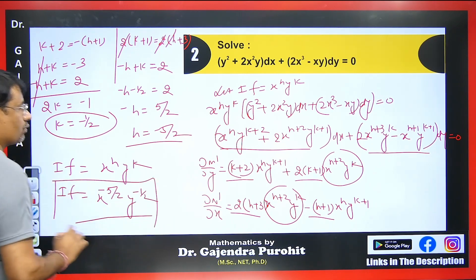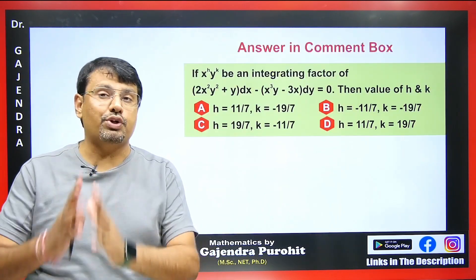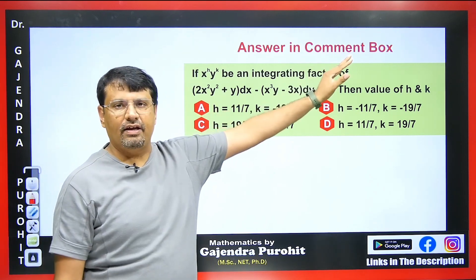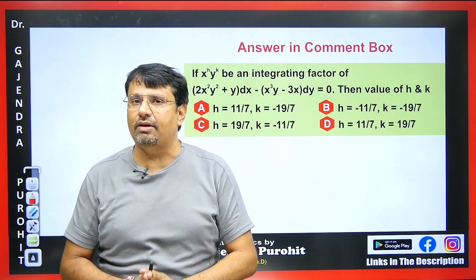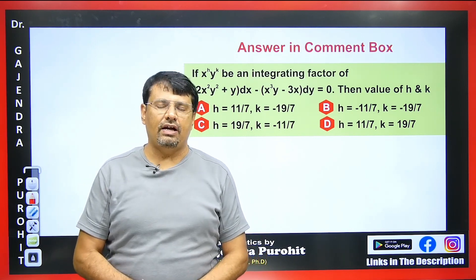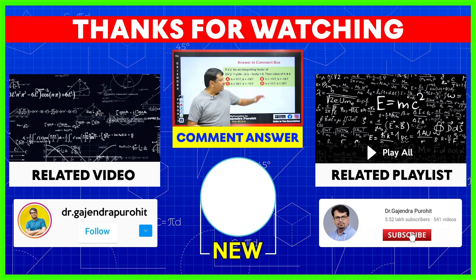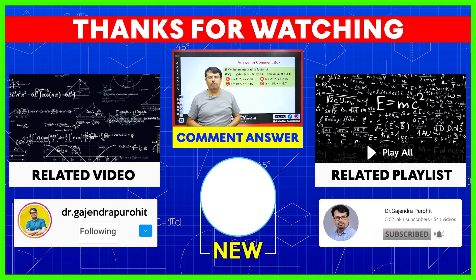Multiplying by this integrating factor will reduce the equation to exact form. Now please provide the answer in the comments — if the integrating factor is x^h · y^k, what will be the values of h and k? You have four options. Share how long it took you to solve in the comments. Thank you for watching. I am uploading valuable videos on my new channel for GATE, IIT JAM, and CSIR exams. Visit my playlist for differential equations 2.0, follow me on Instagram, and please like, share, and subscribe.